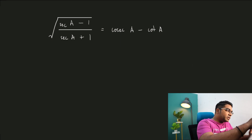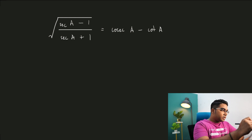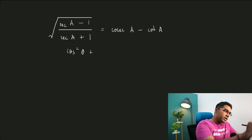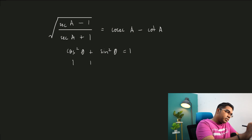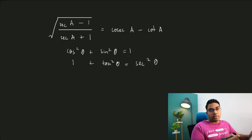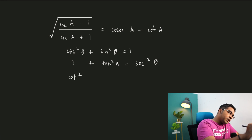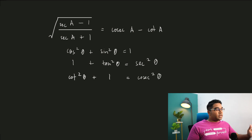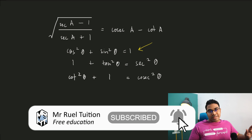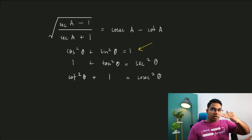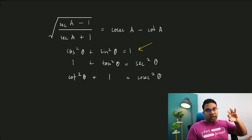Let's note all our basic identities first. We have three of them. They are cos² θ + sin² θ = 1. When you divide the whole thing by cos² θ, you get 1 + tan² θ = sec² θ. And if you divide by sin² θ, you get cot² θ + 1 = csc² θ. You just have to remember the first one and divide by cos² then by sin² to get all three.